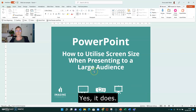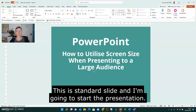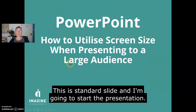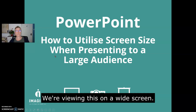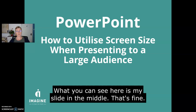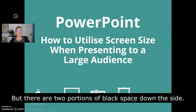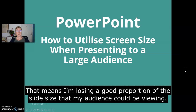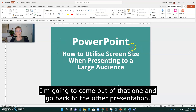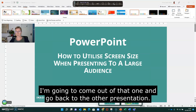I'm going to take us first of all to this slide — this is our standard slide — and I'm going to start this presentation. So we're viewing this on a widescreen. What you can see here is my slide is in the middle, but what I have here is two portions of black space down the sides. That means I'm losing a good proportion of the slide size that my audience could be viewing.